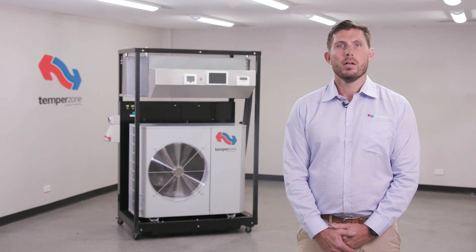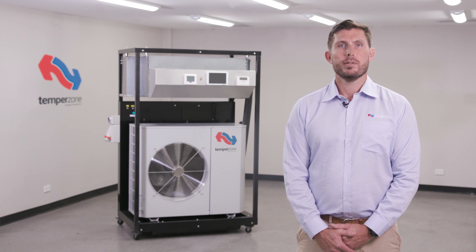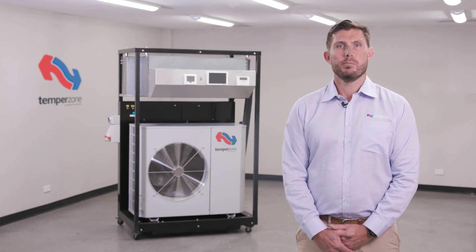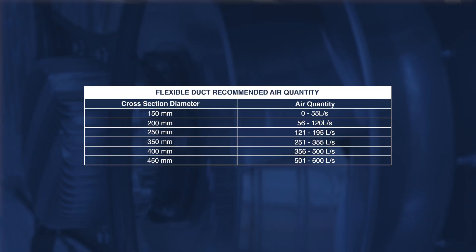Units with short return air plenums will often show two circles of debris on the indoor coil after many hours of operation. Flexible duct is limited to the volume of air it can deliver by its cross-sectional area. Design flexible ducting so that the duct selected can supply the nominal airflow of the unit.